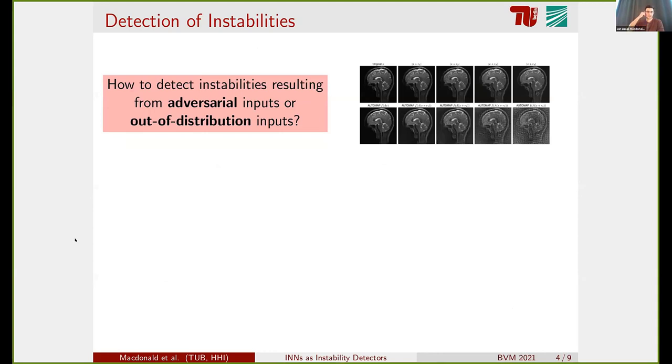So if these instabilities occur, this is the premise of our work, can we at least detect them? Can we have a kind of warning system that tells the user, okay, maybe with this input, there might be something going wrong? We want to consider two types of instabilities and two types of perturbations. First one are adversarial perturbations, and the second one are out of distribution inputs, so adding something to the image that was not seen during training.